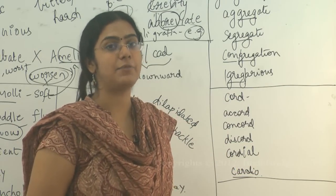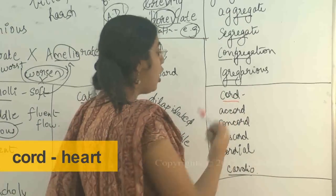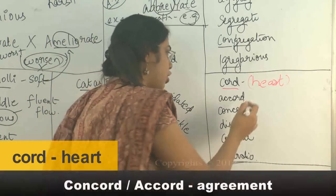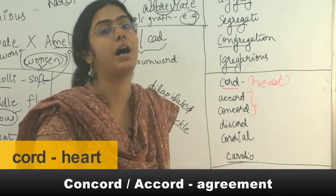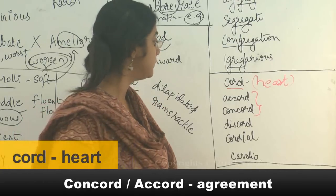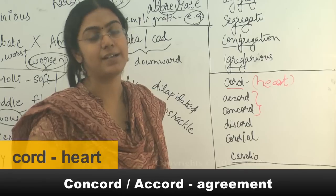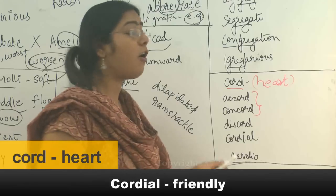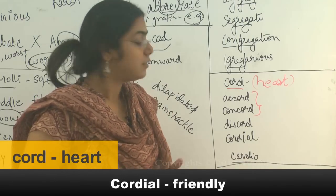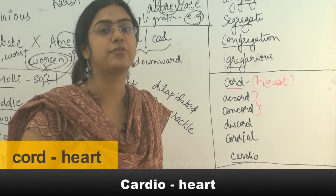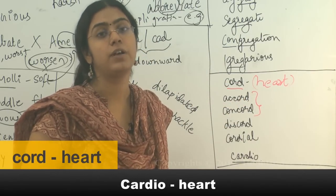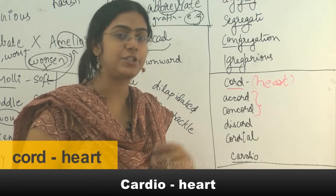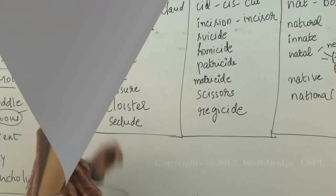The next group has the root word 'cord,' typically to do with the heart. Concord and accord mean agreement — from the heart. Concord is when everyone is in agreement; accord is when you are in agreement. Discord is the opposite of concord — when there is disagreement. Cordial means having friendly relationships. Cardiology is the study of the heart; a cardiologist is a doctor who specializes in the human heart, and a cardiac surgeon operates on hearts.